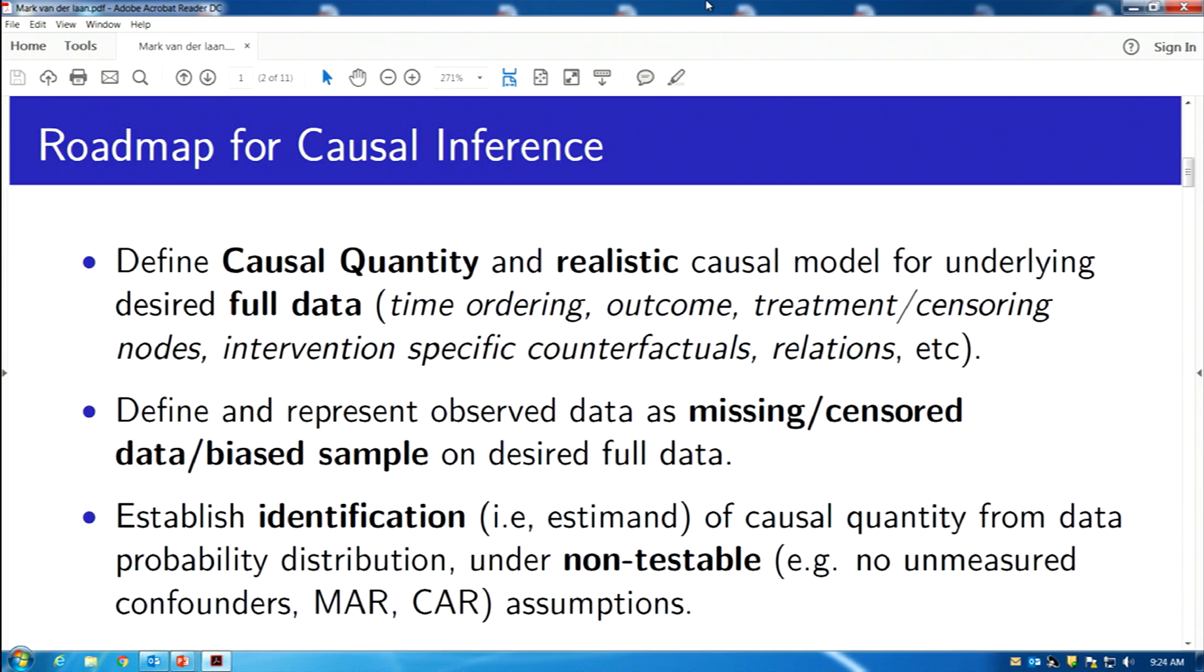Many times, we care about the impact of rules, for example, individualized treatment rules, right? Because in the real world, people don't always say always treat, right? Because if somebody comes in with a certain condition, maybe it doesn't make any sense. So again, defining the real question of interest has to do with defining your particular interventions and what to compare with. And many times, that might be something like how to treat a diabetes patient with a particular rule. When do you start intensifying treatment in response to certain biomarkers and so on?